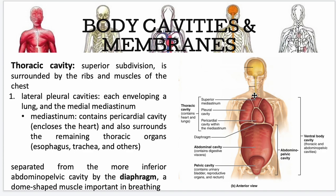Your thoracic cavity is the superior subdivision, surrounded by your ribs and muscles of the chest. The lateral pleural cavities each envelope a lung. You have to be well-versed with directional terms like lateral and superior, because we always utilize them. Your mediastinum contains the pericardial cavity that encloses the heart and also surrounds the remaining thoracic organs such as your esophagus, trachea, and others. The diaphragm, a dome-shaped muscle important in breathing, separates the thoracic cavity from the more inferior abdominopelvic cavity.